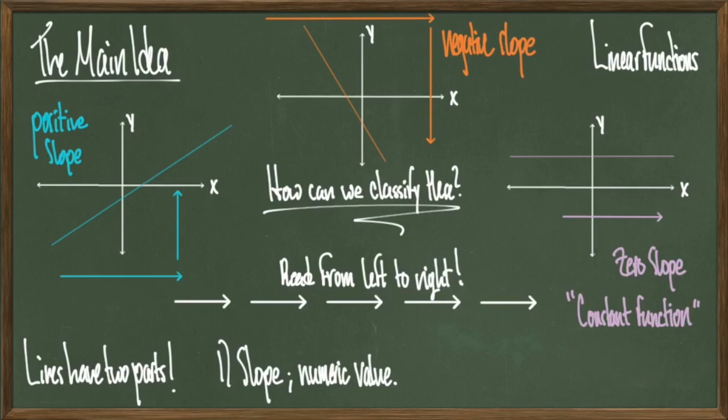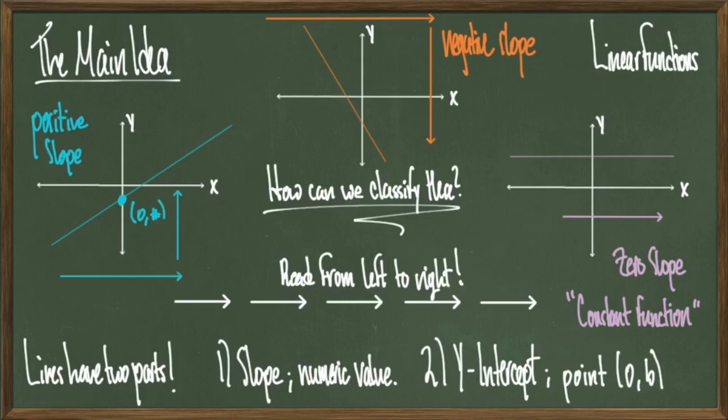So now that we've talked about slope, we need to talk about the second part of classifying lines. The second major part of a line is the y-intercept. So it's not enough to know how steep the line is, we also need to know where it crosses the y-axis. This information will be encoded by a point on the graph, where your x-coordinate is 0, and your y-coordinate is just whatever the corresponding number is.